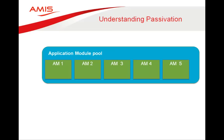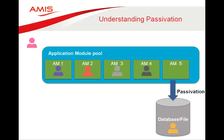Let's understand application module pooling passivation. Suppose we have a pool of five application module instances used by five users. When a sixth user comes in and needs an application module, one application module is saved to the database — for example, application module five is passivated and saved. Now application module five is available for the sixth user. This process is called passivation.